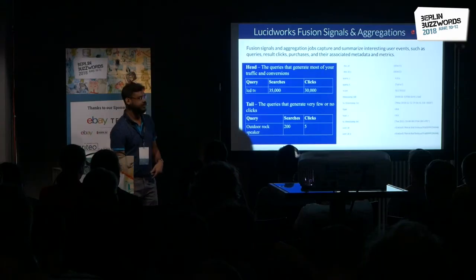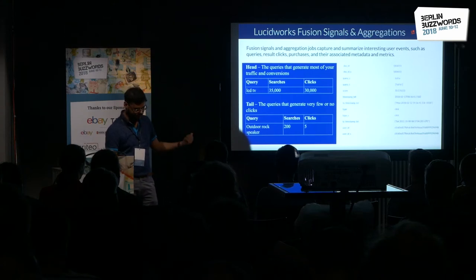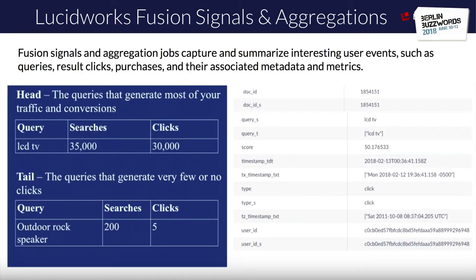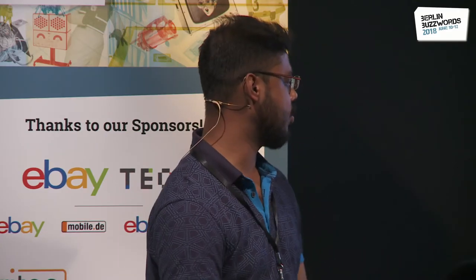A Lucidworks Fusion signal document contains the doc ID, query, timestamp, and event type — click, add-to-cart, hover, or order conversion. For example, the query 'LCD TV' received 35K searches and 30K clicks, giving a conversion rate of about 0.8–0.9, making it a head query. Meanwhile, 'outdoor rock speaker' was searched 200 times and clicked only 5 times — a conversion rate of 0.04 — making it a tail query.